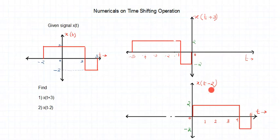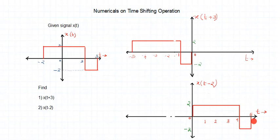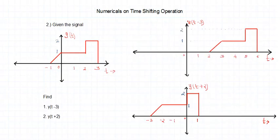This particular entire signal shifted to the right is X(T - 2). What do you observe in both examples? The shape of the signal remains the same — the shape doesn't change. What changes is the time position of the signal, and that's why we call it a time shifting operation.